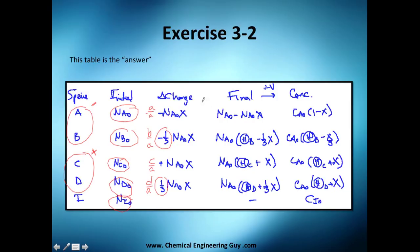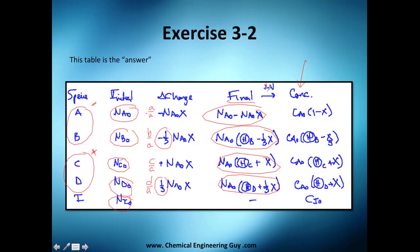Initial plus change gives you the final amount for each species. Since they are asking for concentrations, we just divide each final amount by volume: divide by V to get concentration of A, divide by V for B, divide by V for C, and divide by V for D.